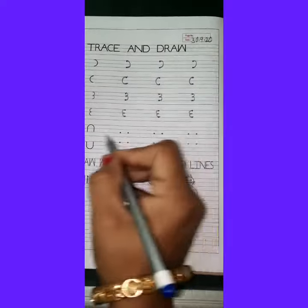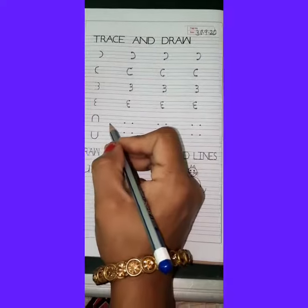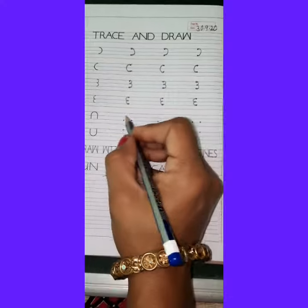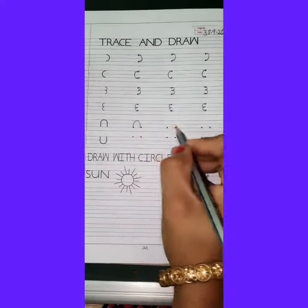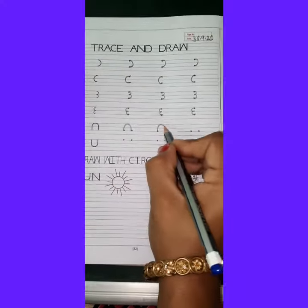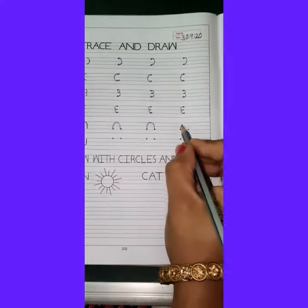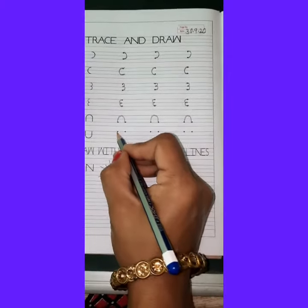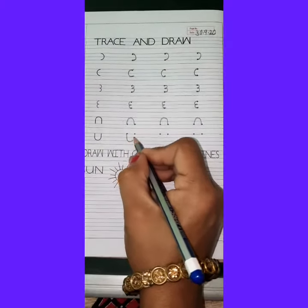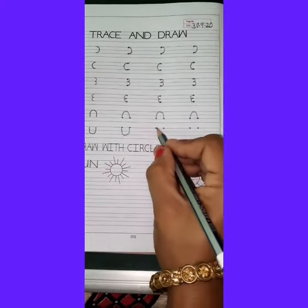Now children, we will write curve line uppercase U like this. Now we will write curve line, C and U like this.